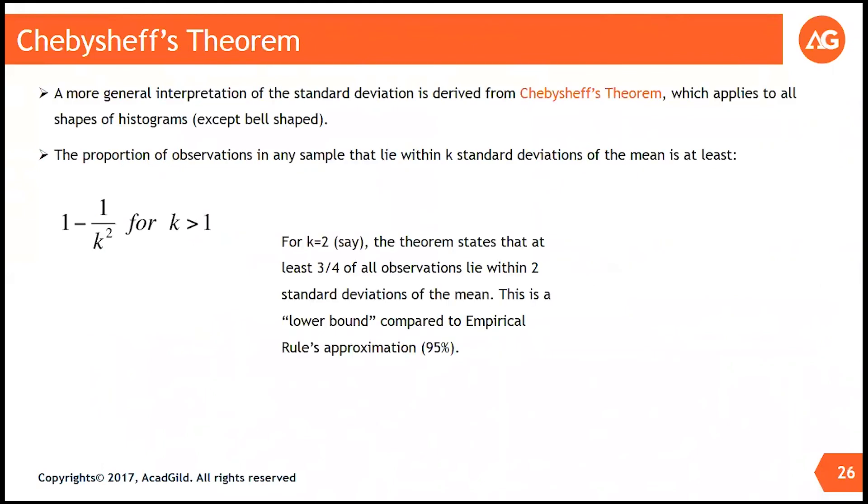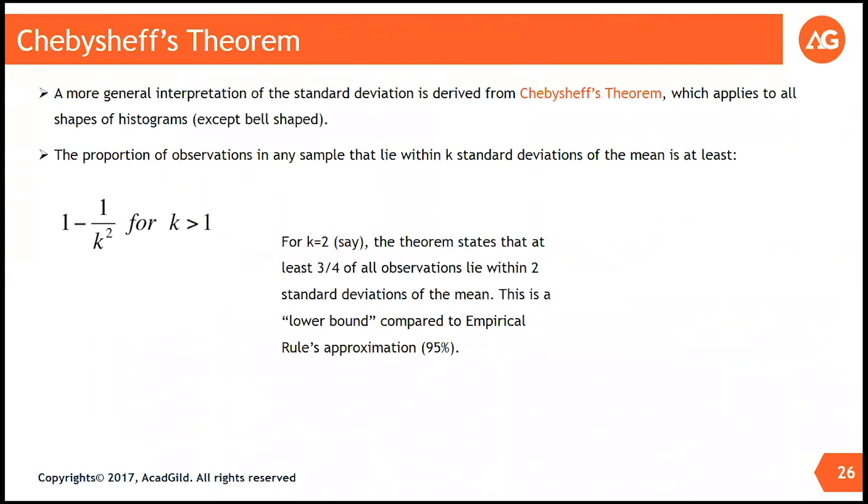So, before we go in detail of this, let us take some cases. Suppose I plot the data, two sets of data. One is which has very less standard deviation and one which has very high standard deviation. They both of them have the same mean. So, there is this data and there is this data. Which one do you think? Case A or case B?